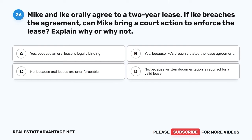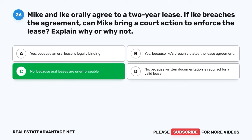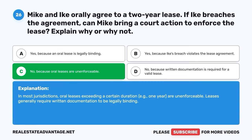Question 26. Mike and Ike orally agree to a two-year lease. If Ike breaches the agreement, can Mike bring a court action to enforce the lease? A. Yes, because an oral lease is legally binding. B. Yes, because Ike's breach violates the lease agreement. C. No, because oral leases are unenforceable. D. No, because written documentation is required for a valid lease. The correct answer is C: No, because oral leases are unenforceable. In most jurisdictions, oral leases exceeding a certain duration (for example, one year) are unenforceable. Leases generally require written documentation to be legally binding.